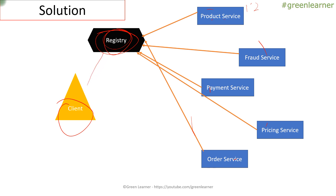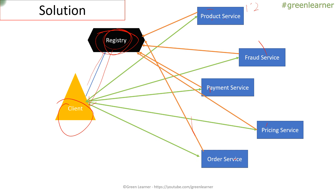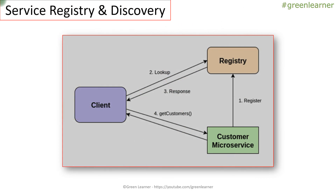All the registry and discovery logic has been moved to this separate service. Now, before contacting individual services, the client calls the registry service. From the registry service it gets the individual information — for example, if it wants to call the product service it fetches the product service address from here. After getting the exact address, it calls the individual services. First, all services register with the registry service; then the client discovers whichever service it wants — product, fraud, payment, pricing, or order — and sends the request accordingly.